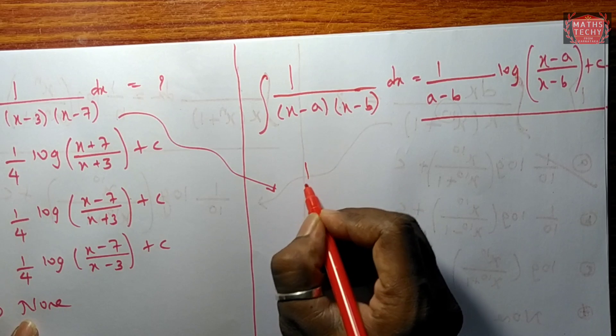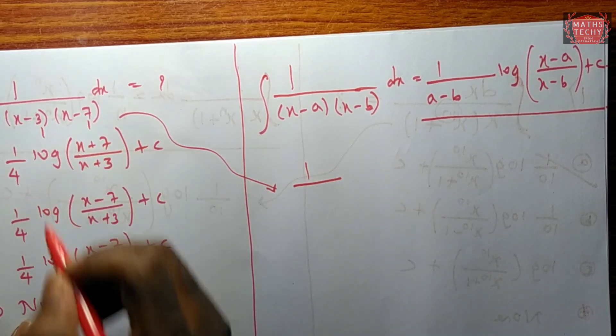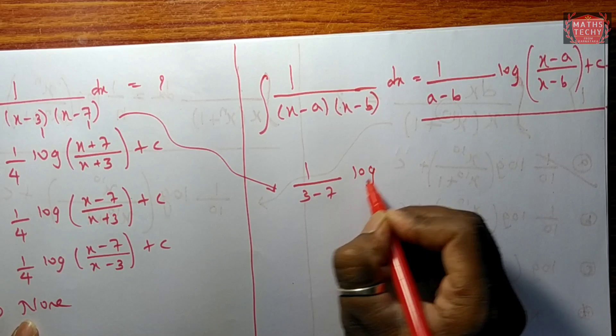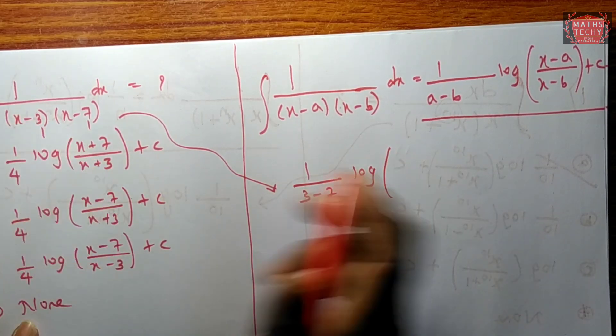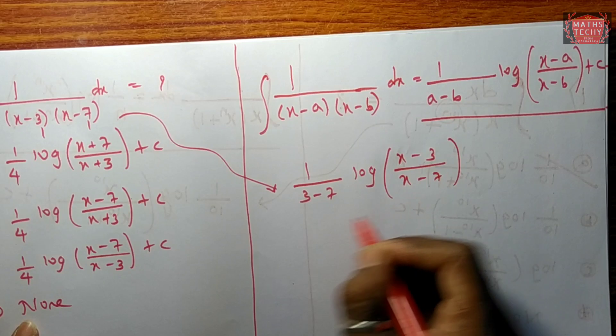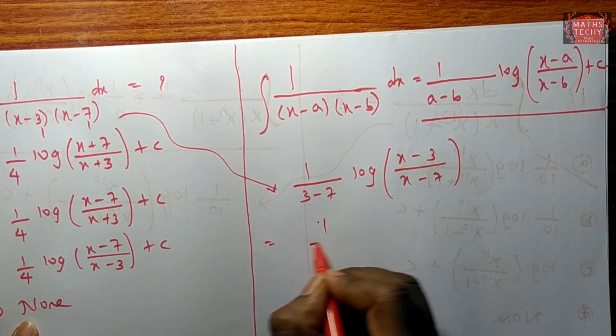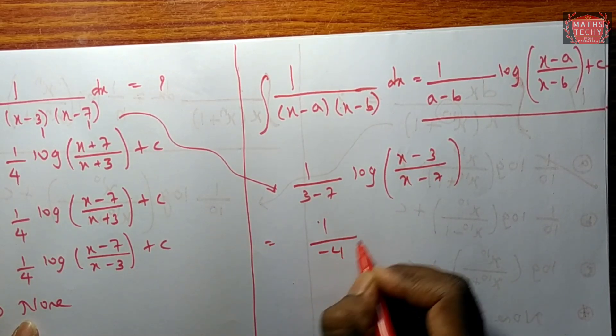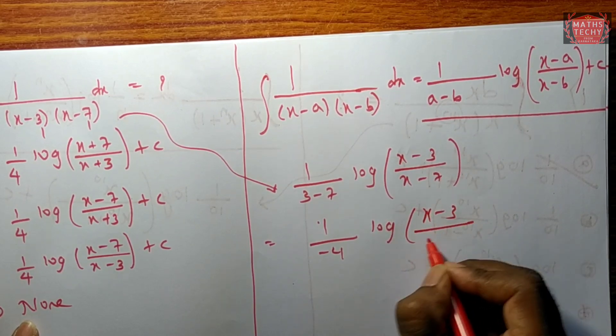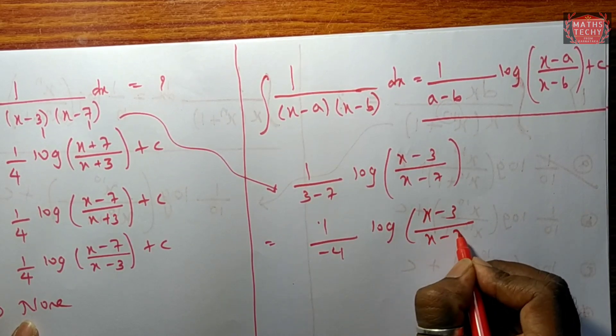This is how we solve this. 1 divided by, here it's 3 and 7, this is 3 minus 7 log of x minus 3 divided by x minus 7. Observe.